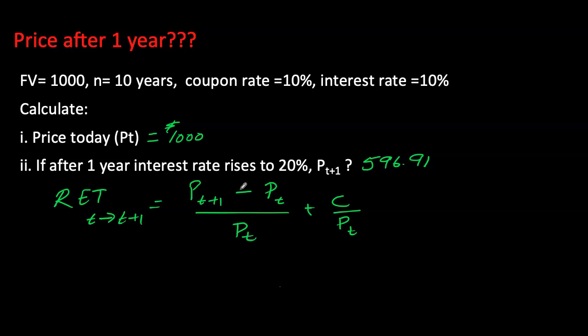This first term over here is giving us our rate of capital gain, and the second term is our current yield. In this case, because interest rates have gone up—I'm assuming interest rates have risen from 10% to 20%—the new price is a lot lower than our purchase price.